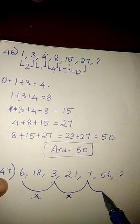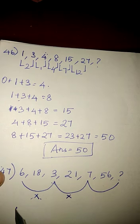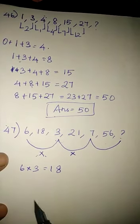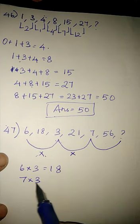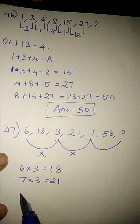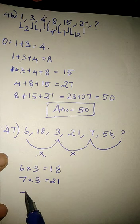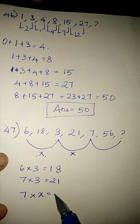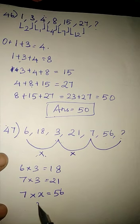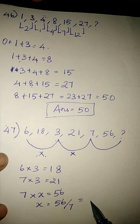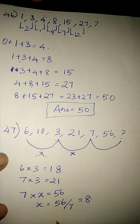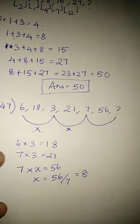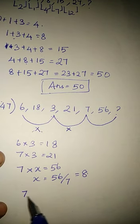And what will come next? See, 6 into 3 is 18. Then 7 into 3 is 21. Then what will come next? 7 into x equals 56, x equals 56 by 7 which gives 8.